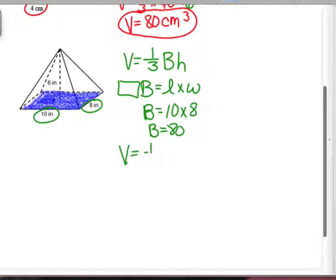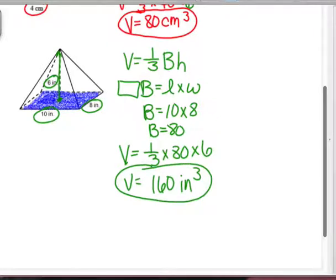All right, back to my volume. One-third, times 80, times the height of the pyramid. Height of the pyramid goes from the center of the base, straight up to the top vertex, and that is 6 inches. So, one-third times 80 times 6 is 160 inches cubed. All calculator work. But, you have to know what numbers go where. You have to really kind of understand the different parts of the pyramid and the different parts of the formula.